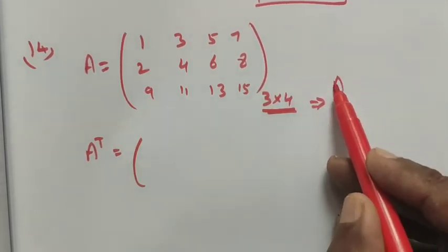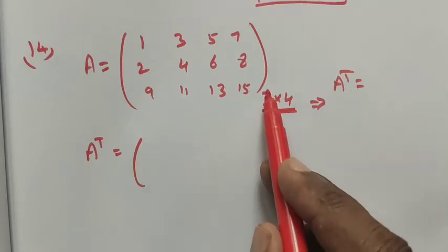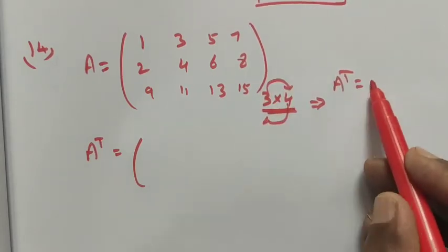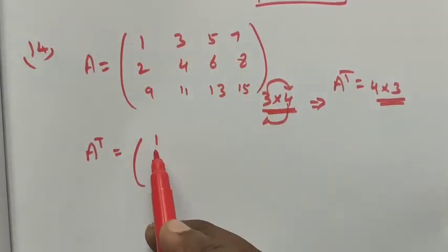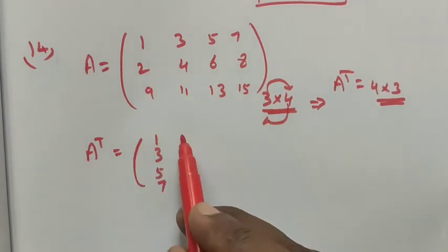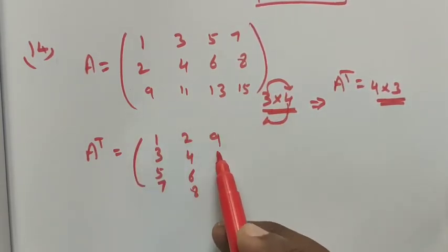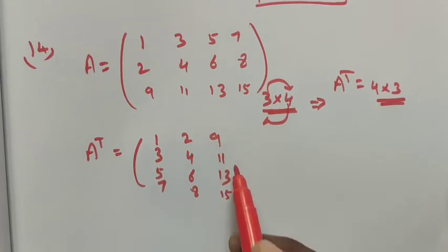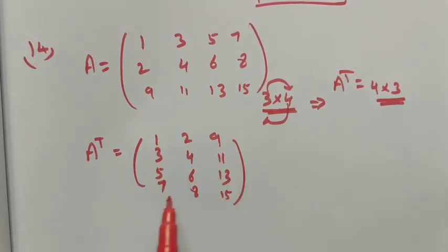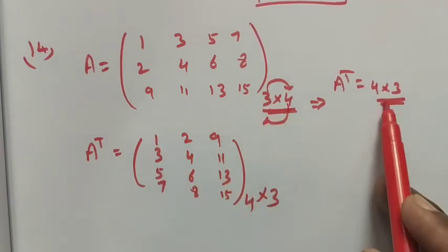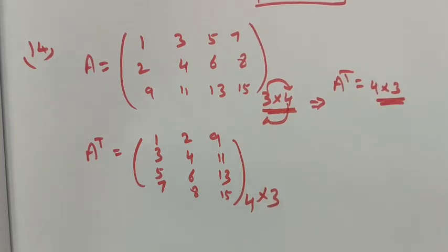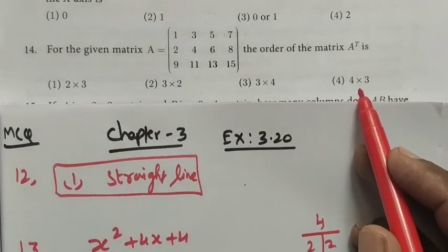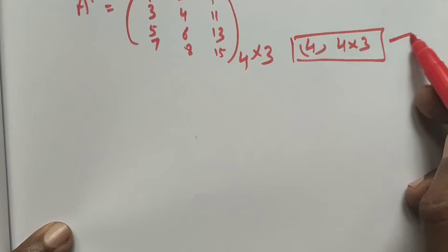So A transpose has rows changed into columns and columns changed into rows, giving a 4 by 3 matrix. We verify: after transposing, counting gives 4 rows and 3 columns. The rows and columns are interchanged. So option four, 4 by 3, is the correct answer.